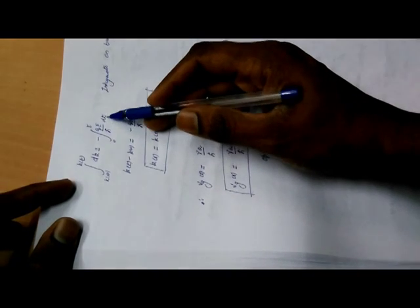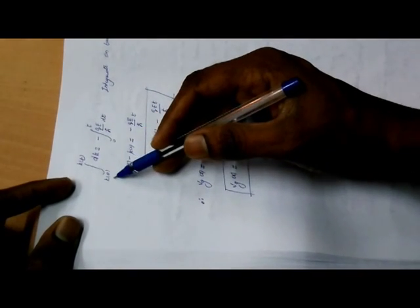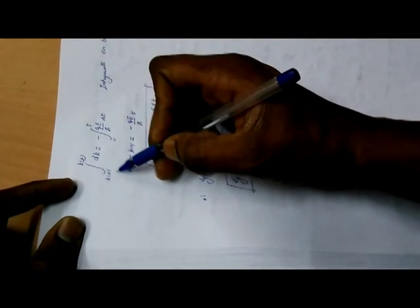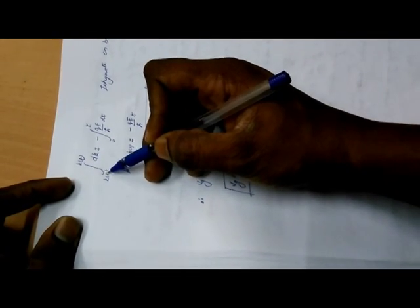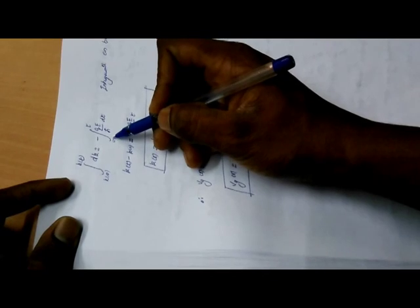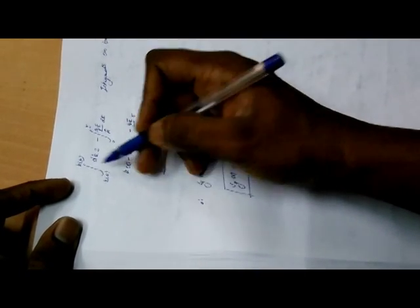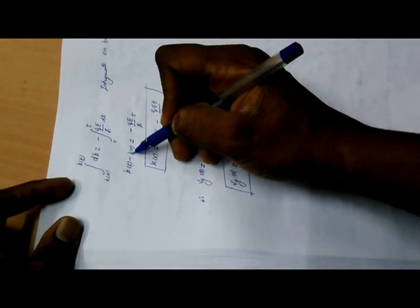Rearranging with dt on that side: integral from k(0) to k(t) for dk, and the right-hand side integration goes from 0 to t.